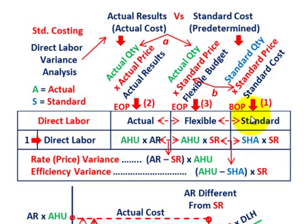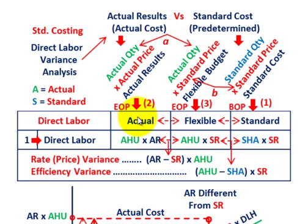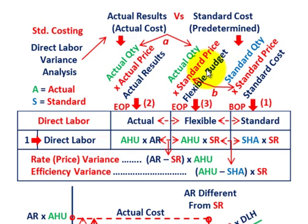In standard costing, we're going to have some standard cost that we establish for direct labor — the direct labor cost of a product we're manufacturing. Then for our period of analysis, we determine the actual cost for our direct labor based on actual results. And then knowing our actual costs and the standard we established, we can determine the flexible amount. Based on that flexible budgeted amount, we can determine our variances between our actual, flexible, and standard amounts.